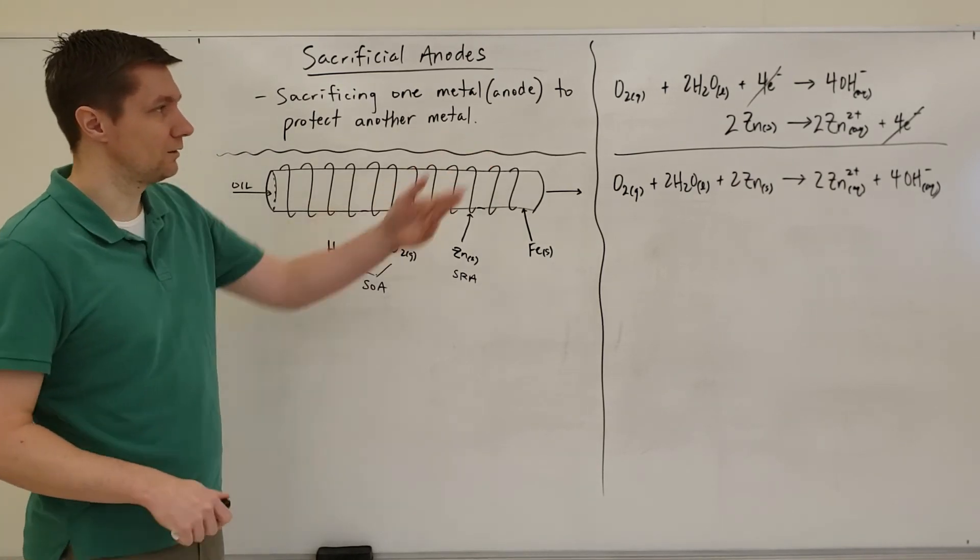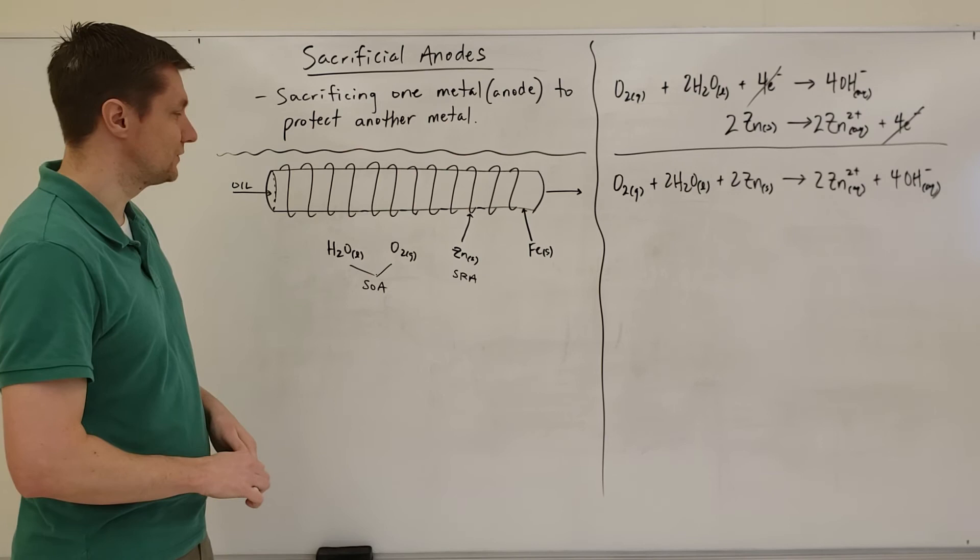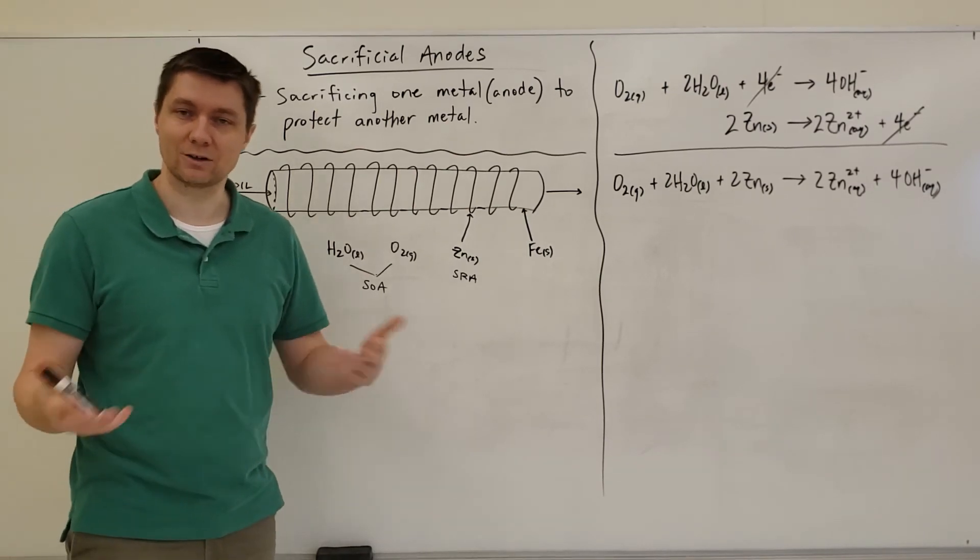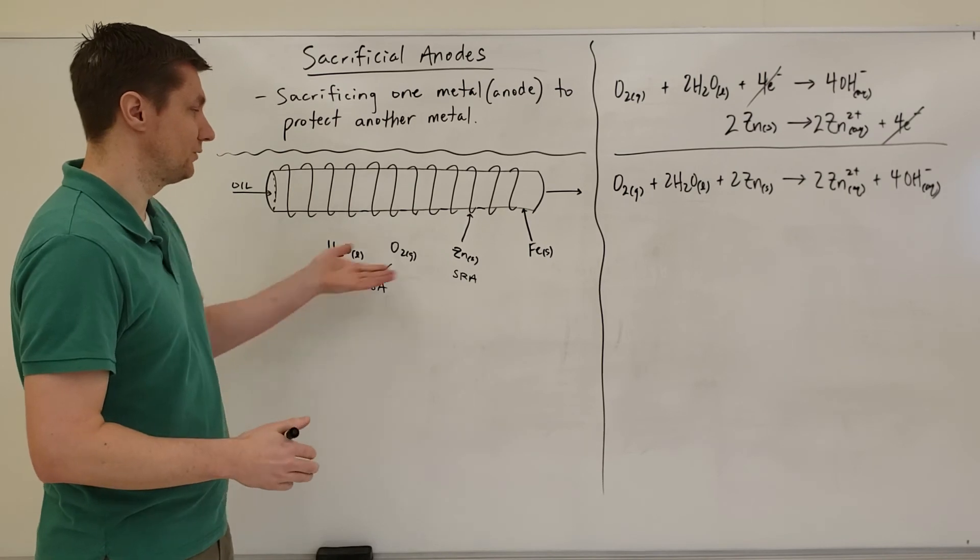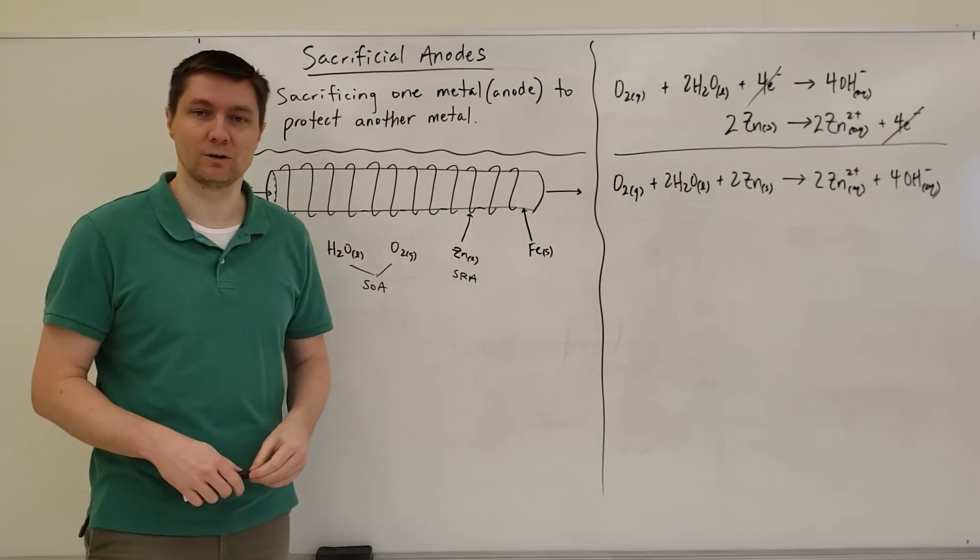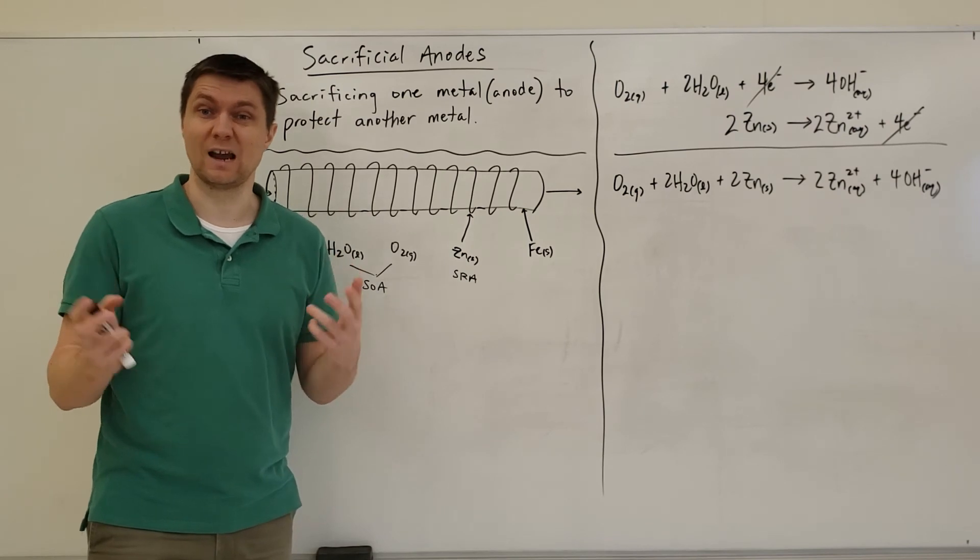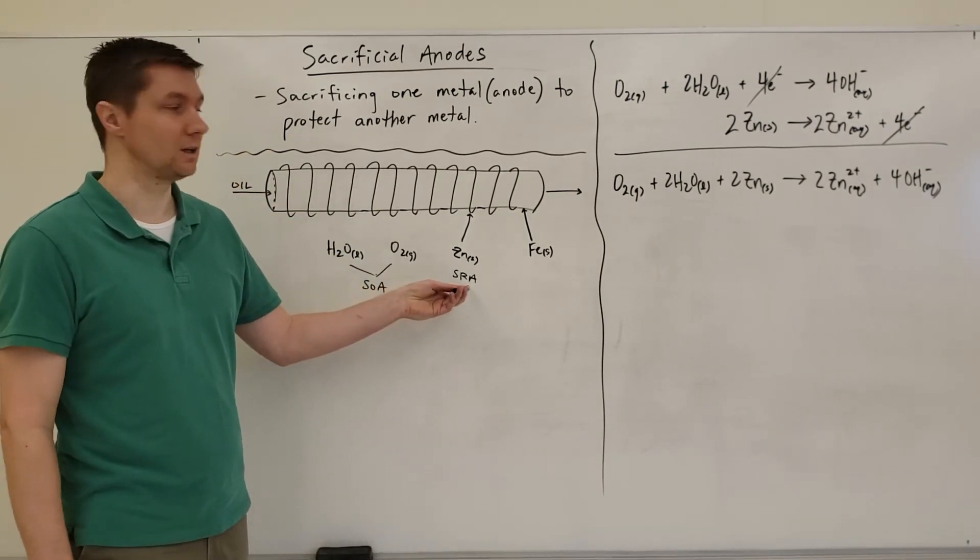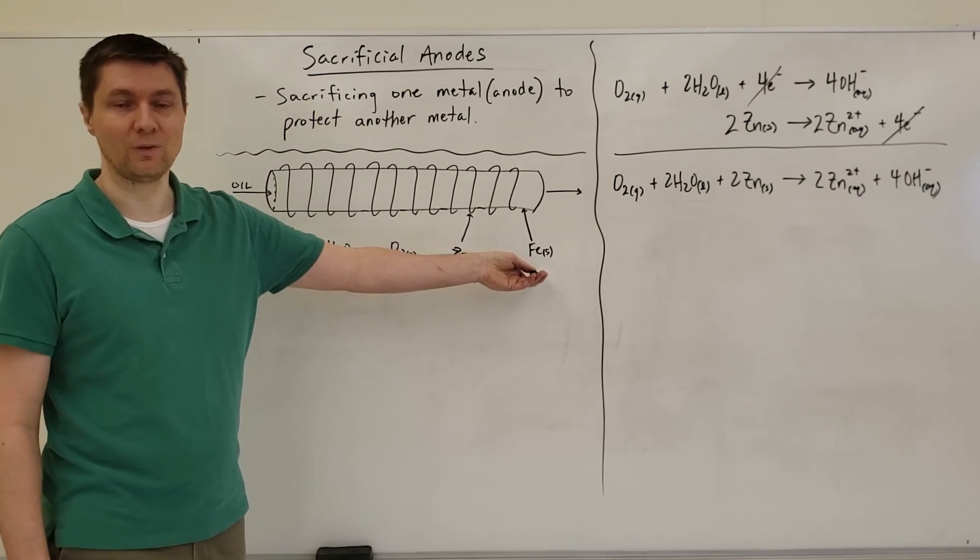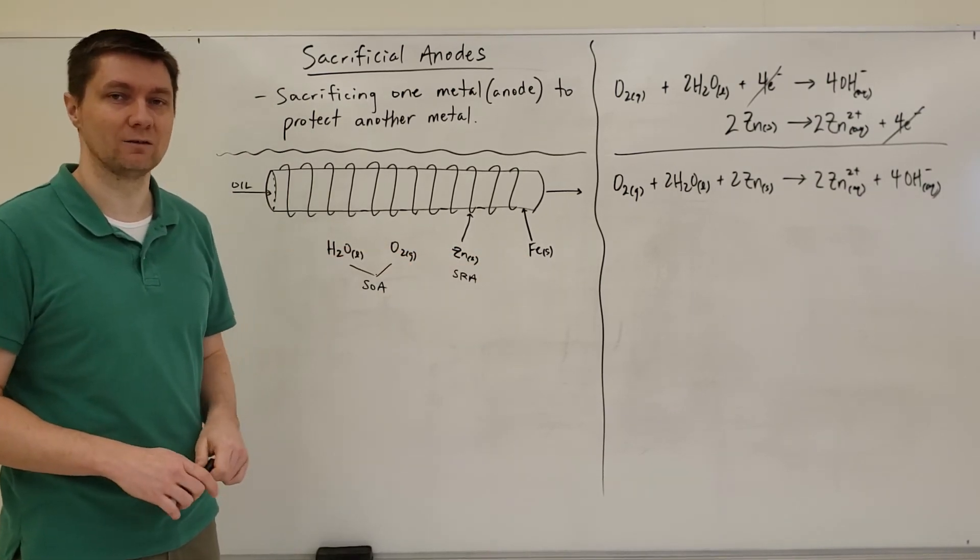If you take a look at what I've done on the other side, you can see the two half reactions I've written down and the full redox reaction that occurs. You can see that iron is not part of that chemical reaction, so it's protected. In other words, we're sacrificing zinc in order to protect the iron. This is the concept of sacrificial anodes.